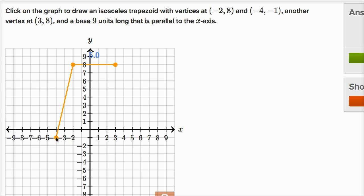All right, now this is looking like a trapezoid. And now a base nine units long that is parallel to the x-axis. So base that's nine units long and it's parallel to the x-axis. So we just have to move to the right nine units. One, two, three, four, five, six, seven, eight, nine units.